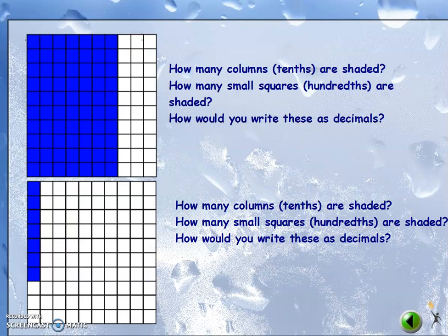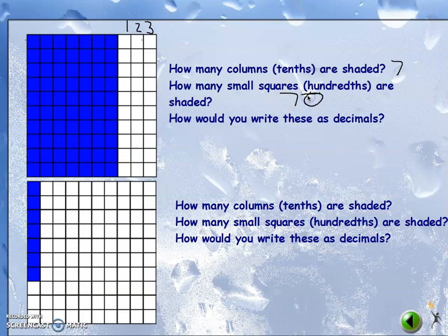How many columns or tenths are shaded? For this one, there are one, two, three columns not shaded — I know there are ten total, so that is seven columns. How many small squares or hundredths are shaded? Seven times ten is seventy. I could write the tenths as 0.7, zero and seven tenths, and I could write the hundredths as zero and seventy hundredths.